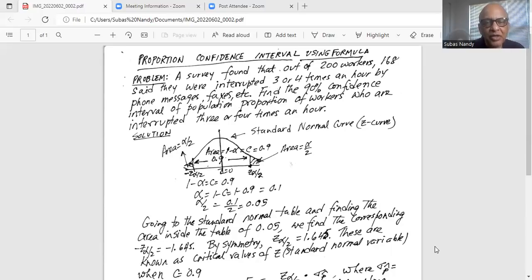Now the total area in the two tails together is 0.1. And because of the symmetry of the standard normal curve, area in each tail is alpha by 2, or 0.1 divided by 2, which is 0.05.